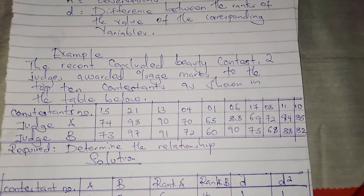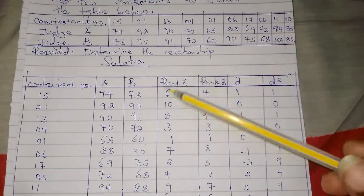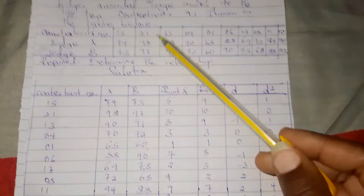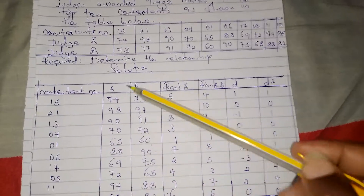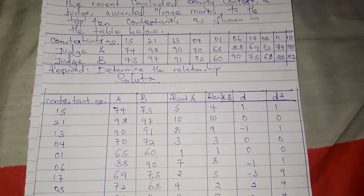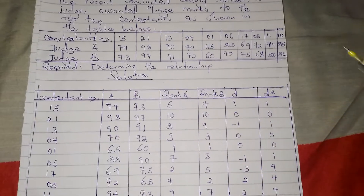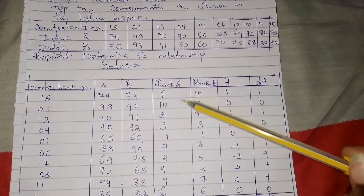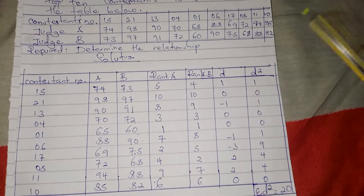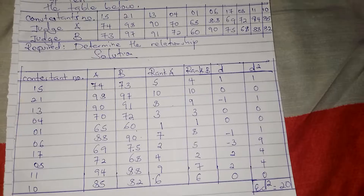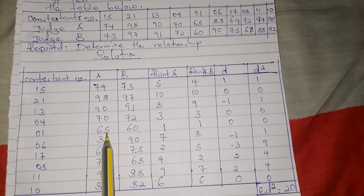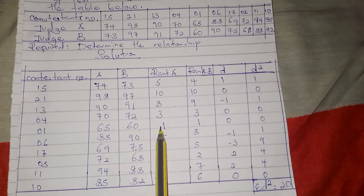We draw a table with the contestant number as given, then Judge A and Judge B columns. We read the values as given in the question. Then we rank the marks given by Judge A — you can rank from lowest to highest or highest to lowest. Here we are ranking from lowest to highest, so for Judge A, 65 is the lowest and becomes rank number one.